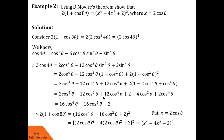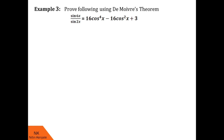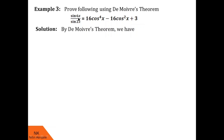I hope you understood that solution. Now let us proceed for example number 3. Here we are asked to prove using De Moivre's theorem that sin 6x / sin 2x = 16cos⁴x − 16cos²x + 3. We know that no matter whose expansion you want, we begin with cos nx + i sin nx = (cos x + i sin x)^n. Here n is 6, and we first find out the expansion for sin 6x.